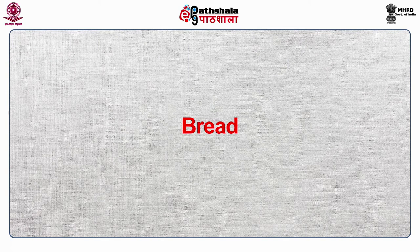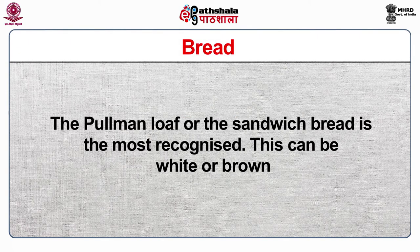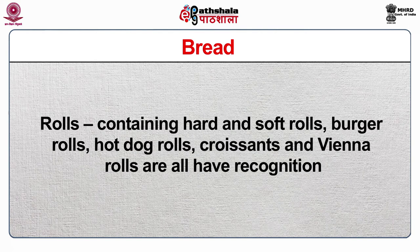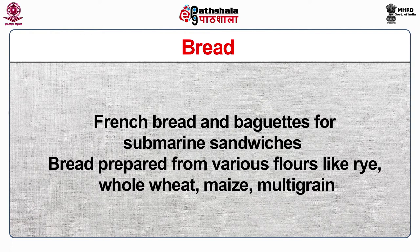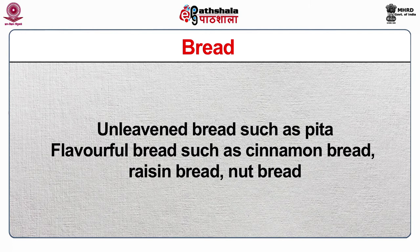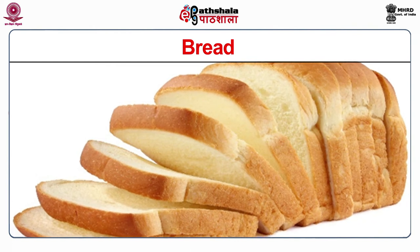There are various kinds of bread used to prepare sandwiches. The Pullman loaf or sandwich bread is the most recognized and can be white or brown. Rolls include hard and soft rolls, burger rolls, hot dog rolls, croissant and Vienna rolls. French bread or baguettes are used for submarine sandwiches. Bread can be made from various flours like rye, whole wheat, maize, and multigrain. Unleavened breads such as pita and flavourful breads such as cinnamon, raisin and nut bread are also used. The bread must not loosen or crack after having filling placed in it.